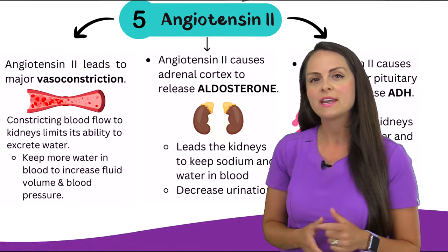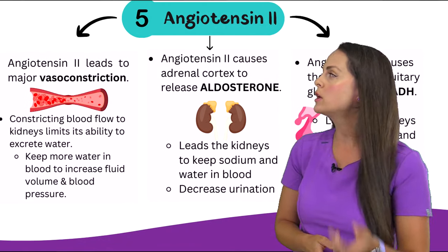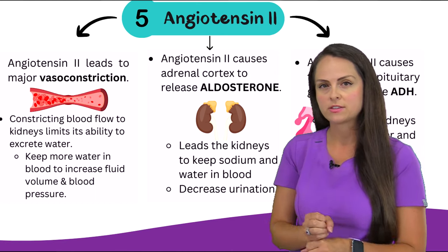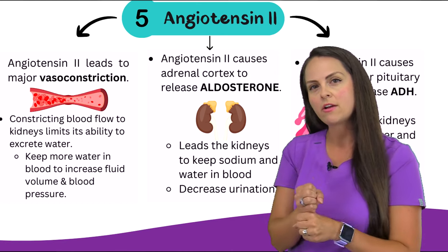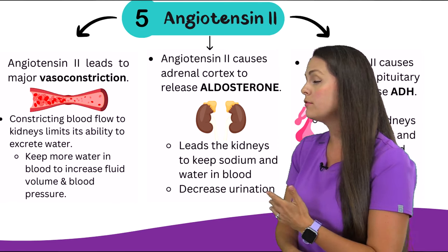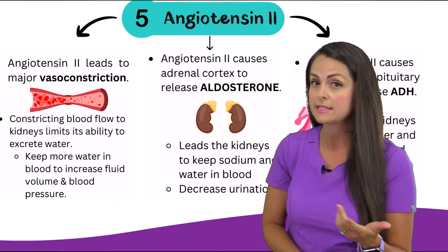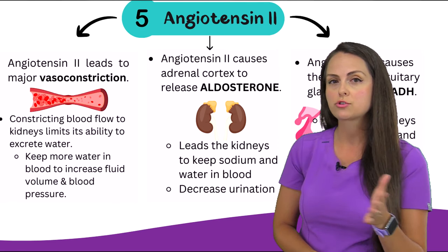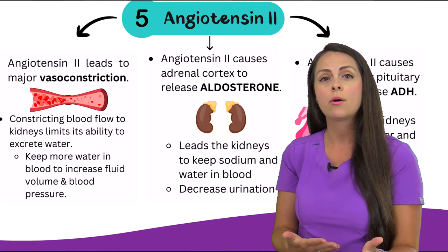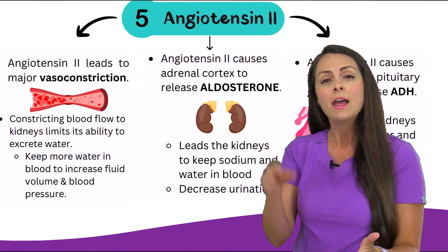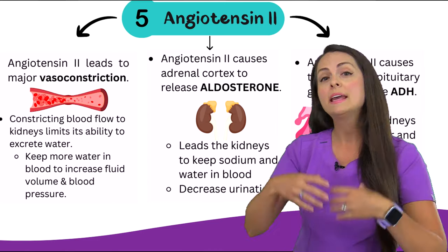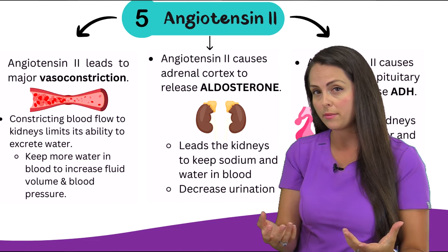One thing angiotensin 2 does is cause vasoconstriction — narrowing of those vessels. When we narrow those vessels, it constricts blood flow to the kidneys and limits their ability to excrete water, which is what we want because we want that water to stay in the body to increase blood volume and hence increase blood pressure.